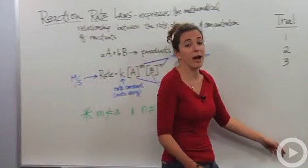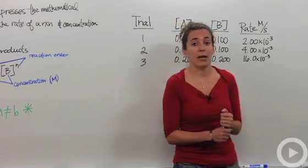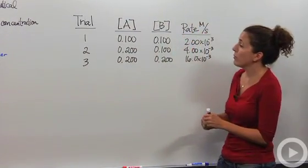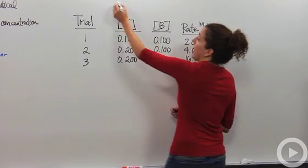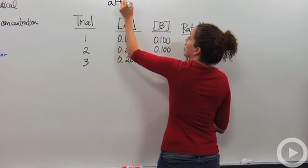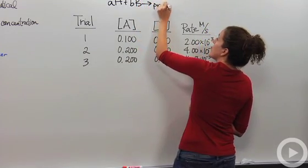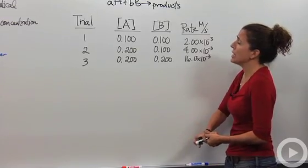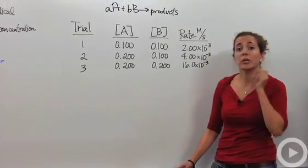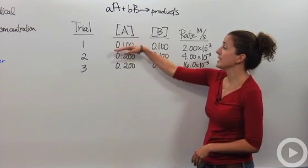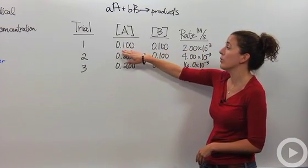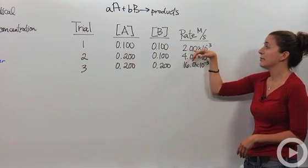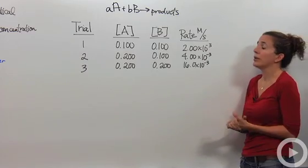So let's talk about how we can actually find the rate law. You're going to need empirical — meaning experimental — data in order to find the rate law for each reaction. For the reaction A plus B yields products, we have two reactants, so I'll run three trials. In the first trial, I put 0.1 mol/L of A with 0.1 mol/L of B, and I observe a rate of 2 × 10⁻³ mol/L per second.